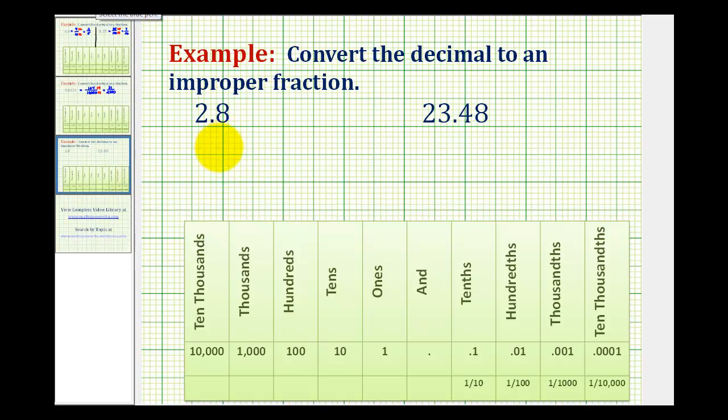We want to convert the given decimals to improper fractions. If we know our place values and we can say the decimals correctly, we can write them as mixed numbers and then convert them to improper fractions.